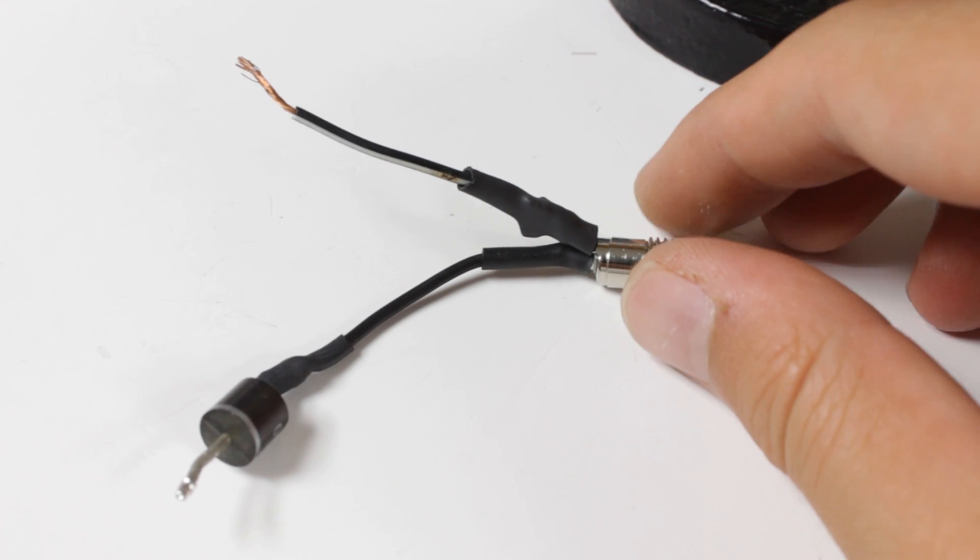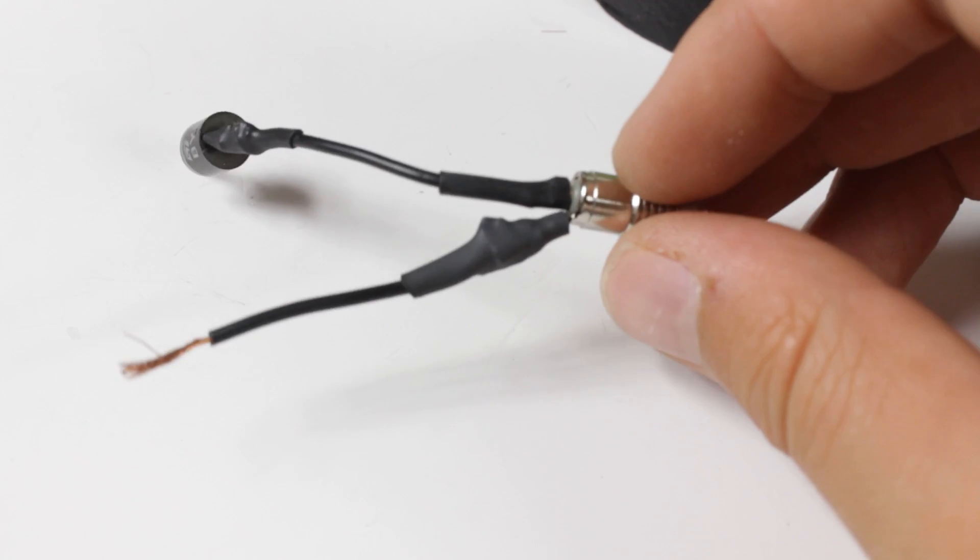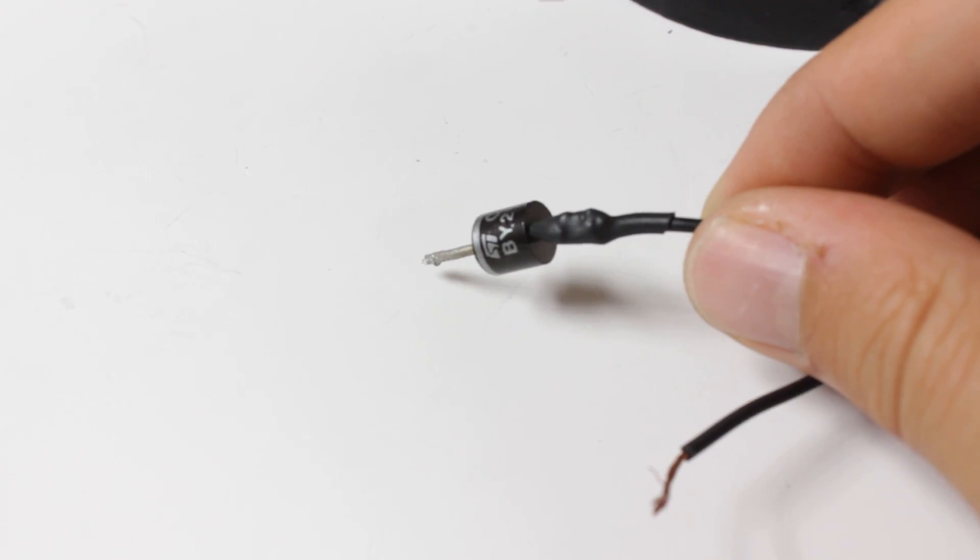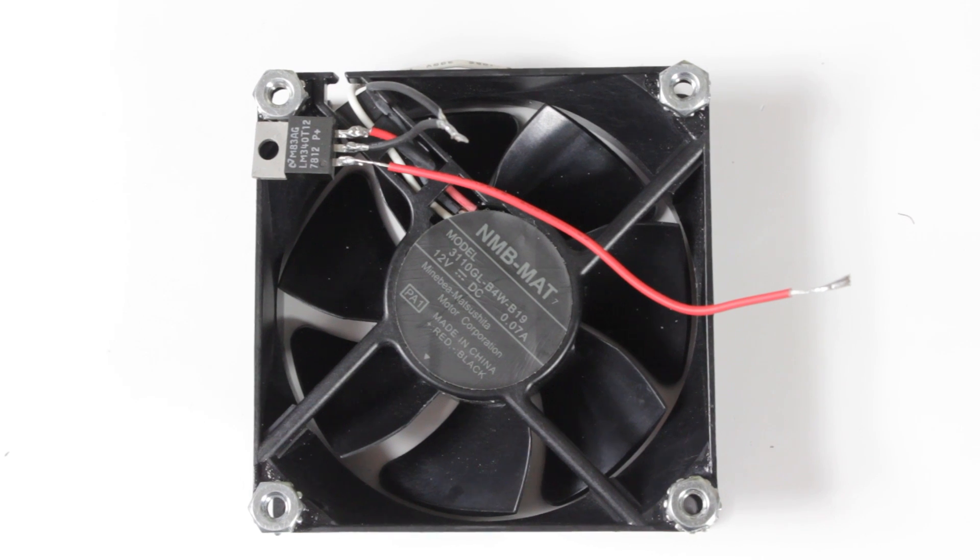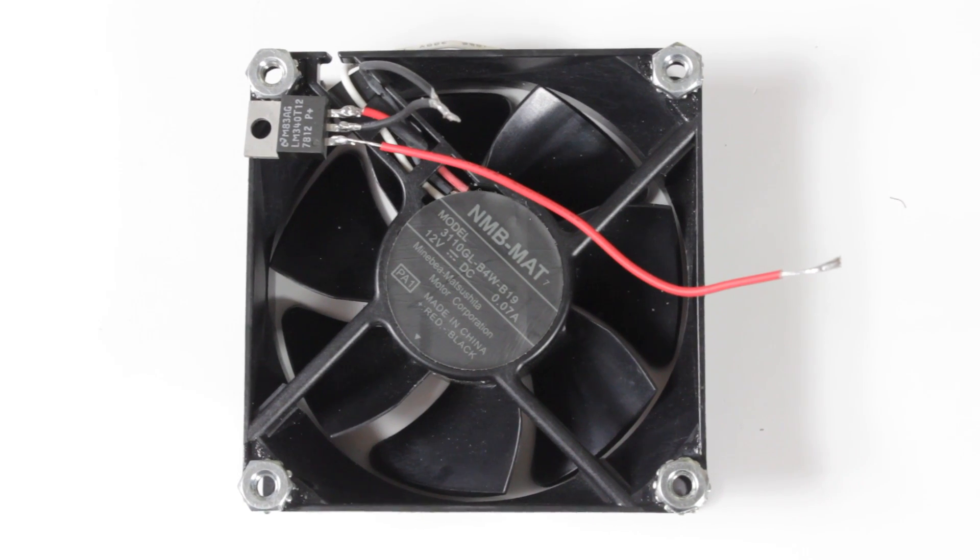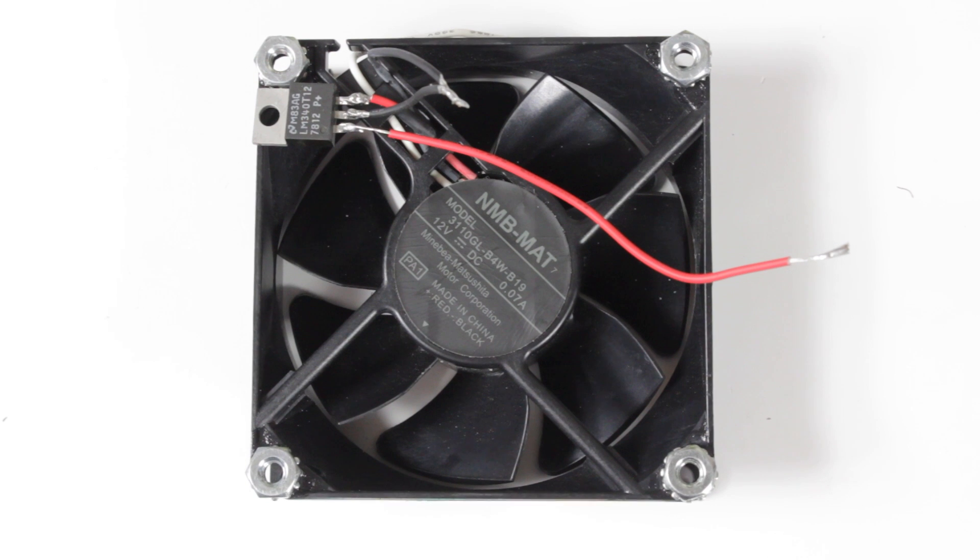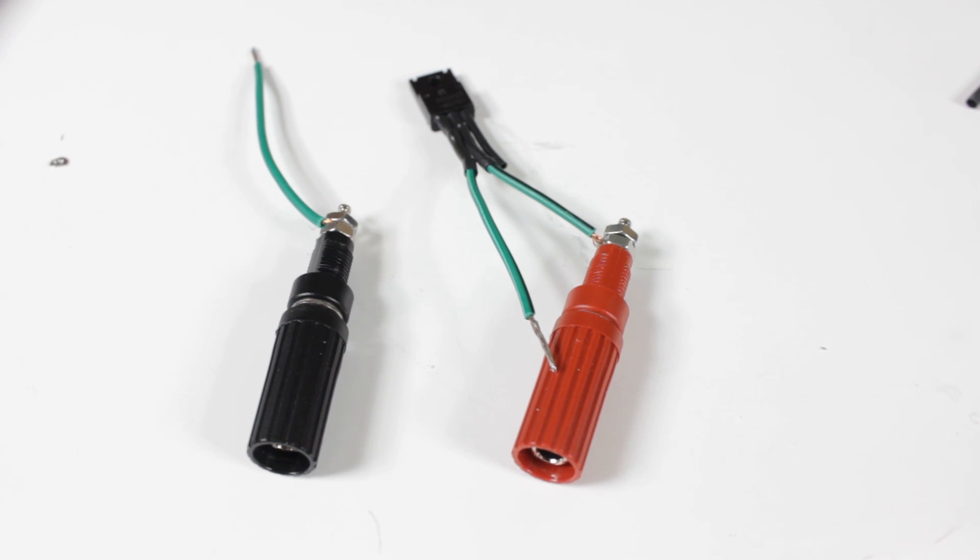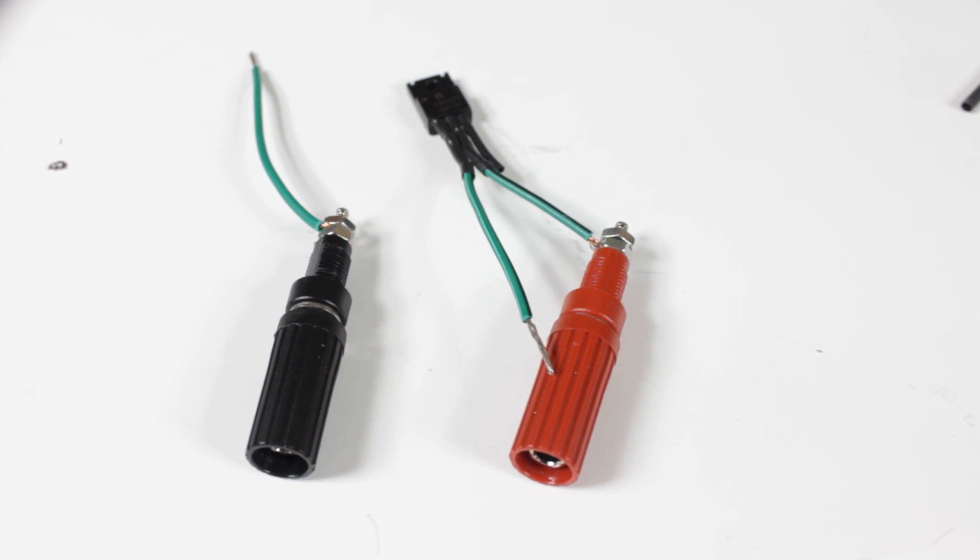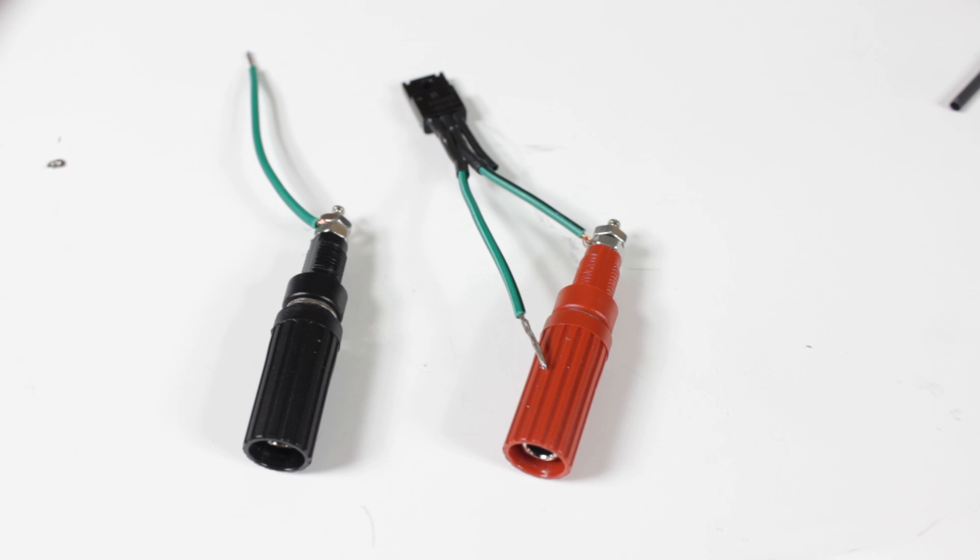When making connections I recommend using shrink wrap to prevent shorts. It's also better looking than electrical tape. The 12 volt voltage regulator is glued directly to the fan so it's going to be out of the way. And here you can see the two binding posts with the diode already soldered.